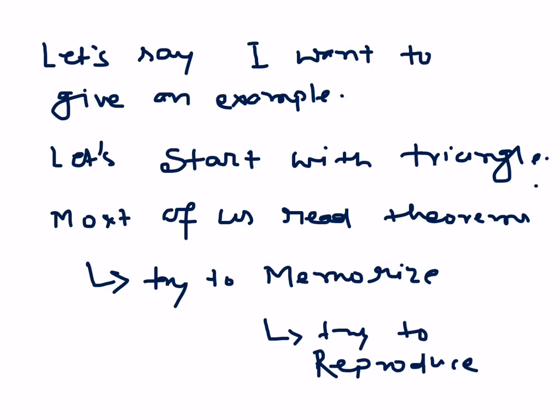Let's say I want to give an example. Let's say with a triangle. So most of us read theorems. What do we exactly do? We read a theorem. We try to memorize it. We try to reproduce it. We try to draw some figures, go back to the book, and again try to see what exactly is orthocenter, what exactly is a median, what exactly is an incenter. And it becomes pretty difficult to take account of all such things. And that's the problem.